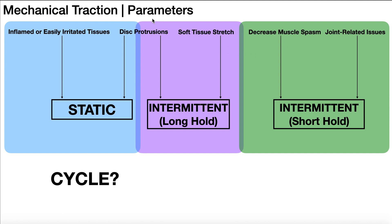For disc protrusions, you can do a static type of traction, but more commonly you'll use what's called intermittent traction — specifically a long hold. The cycle for intermittent traction involves a hold and then a relax, like on/off: traction, no traction, traction, no traction. With a long hold, we're going to hold for a long time before we get to the relaxation. That's more commonly what you would see for disc protrusions.